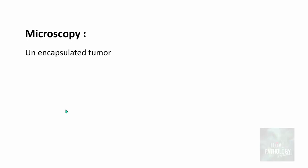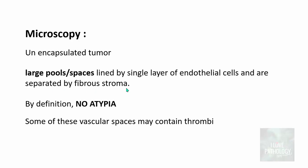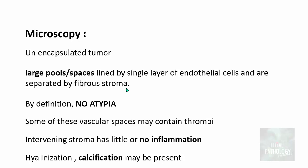On microscopy, cavernous hemangioma is an unencapsulated tumor. Though benign tumors are generally well encapsulated, hemangiomas do not have a distinct capsule — they are circumscribed. They contain large pools or spaces lined by a single layer of endothelial cells, separated by a fibrous stroma. By definition there is no atypia. Some of these vascular spaces may contain thrombi, just like in capillary hemangioma, and the intervening stroma will have very little or no inflammation.